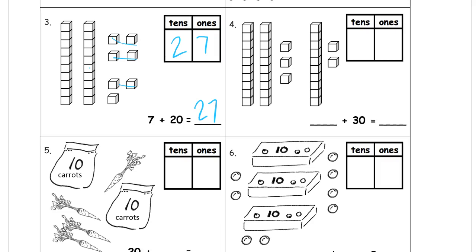And now here we have a place value box, so we're counting groups of ten. One, two, three groups of ten. And how many ones do we have? We have five of those. So it's five, there's the thirty, plus thirty is thirty-five.